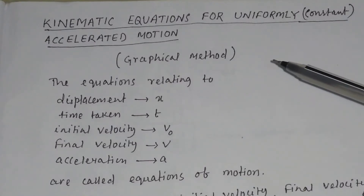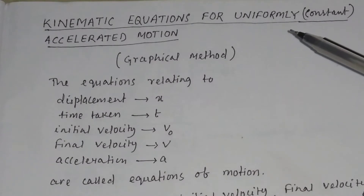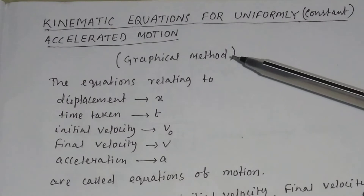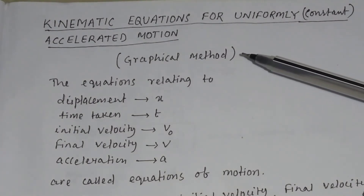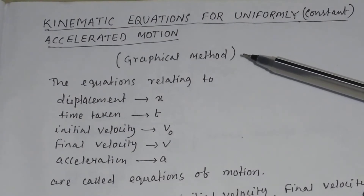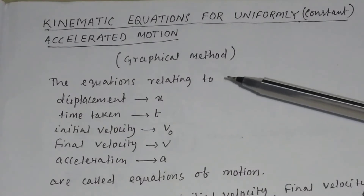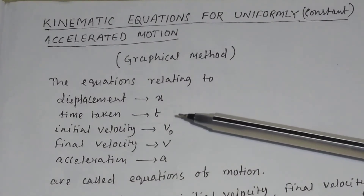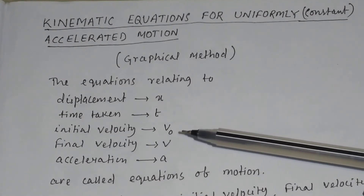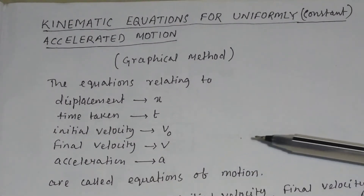In this video, we will discuss kinematic equations for uniformly accelerated motion or constant accelerated motion using the graphical method. The question will come like this: obtain equations of motion for constant acceleration using the graphical method. The equations relating to displacement x, time taken t, initial velocity v0, final velocity v, and acceleration a are called equations of motion.